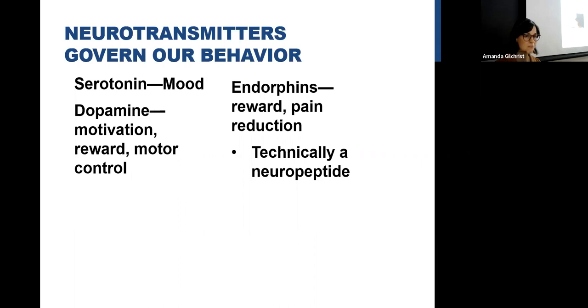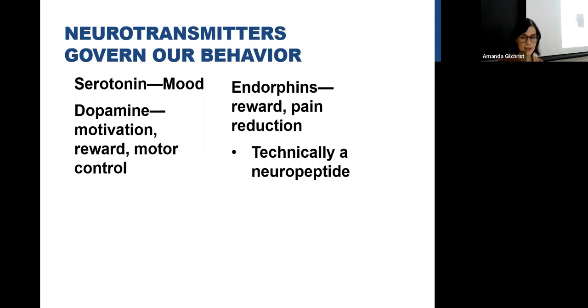Dopamine is really critical for things like motivation, our sense of reward, and it's also important for certain types of motor movements. Oftentimes we're going to find that people that have Parkinson's disease, where they have difficulty making steady movements, often we find that they don't have enough dopamine being produced in certain areas of the brain. Then we have endorphins. Endorphins are really critical for our sense of reward and they're also critical for pain reduction. It is technically a neurotransmitter, but unlike other neurotransmitters in terms of its chemical structure, it's what's called a neuropeptide. It's very tiny.